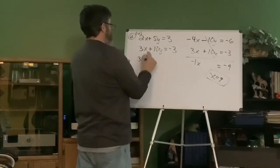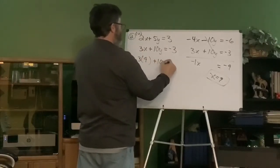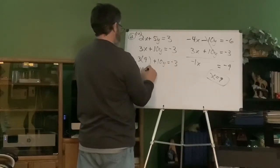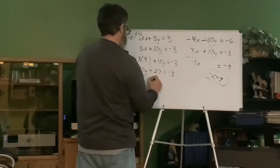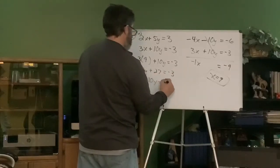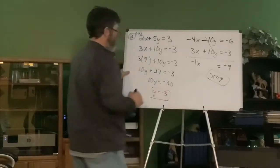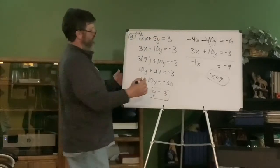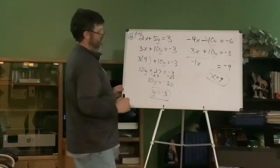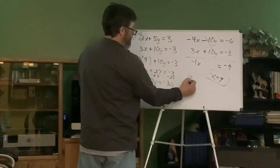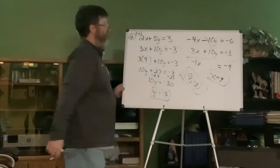What do we do with that? We'll come over here. I can plug it into any one of these four equations, guys. Okay. I'm just going to go right here because it's easy. Three. Take x out of the game. Put a nine into the game. Plus ten y equals negative three. Ten y plus twenty seven equals negative three. Ten y equals negative thirty. Y equals negative three. I know I did that fast, but I bet you guys are good. I've subtracted twenty seven from each side, right? And then I divided by ten. Okay. Answer? Nine negative three.